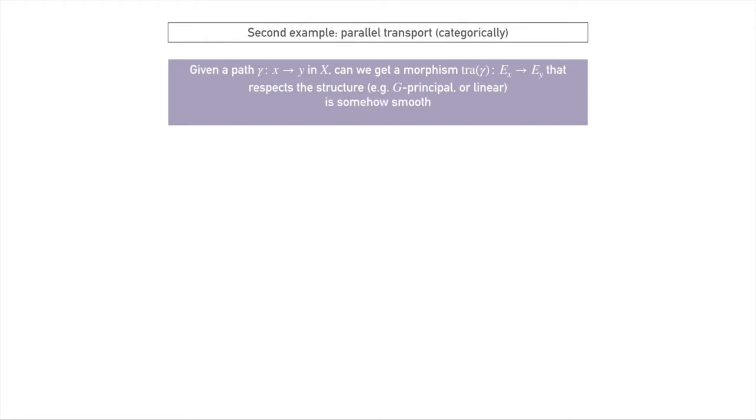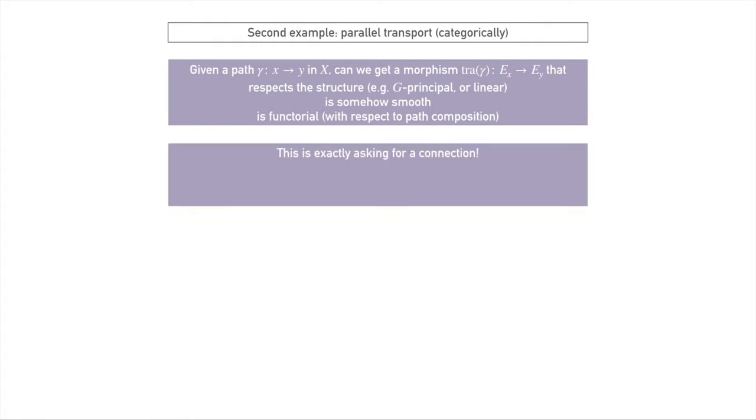Is it somehow smooth or holomorphic or whatever kind of analytic structure we've put on X, if there is one? And is it functorial? That is, given some path X to Y and Y to Z, we get the morphism from E(X) to E(Y), E(Y) to E(Z), but we also get one from E(X) to E(Z) directly by looking at our parallel transport functor applied to the composition. Do these two things agree? It turns out that this is exactly asking for a connection.